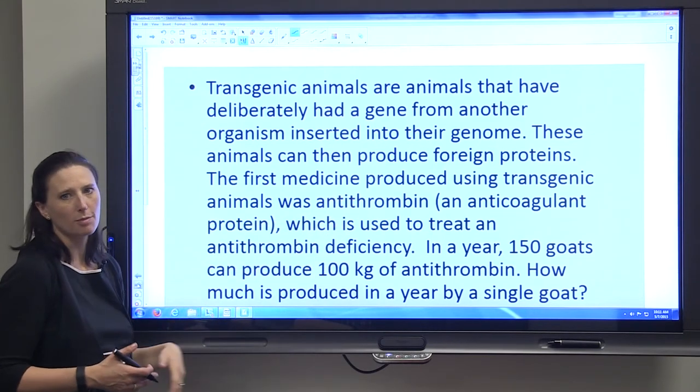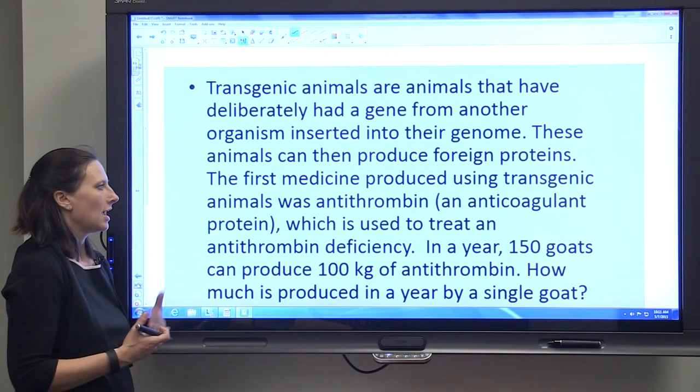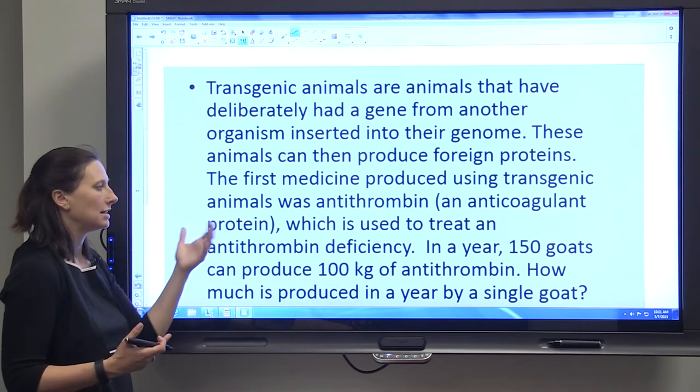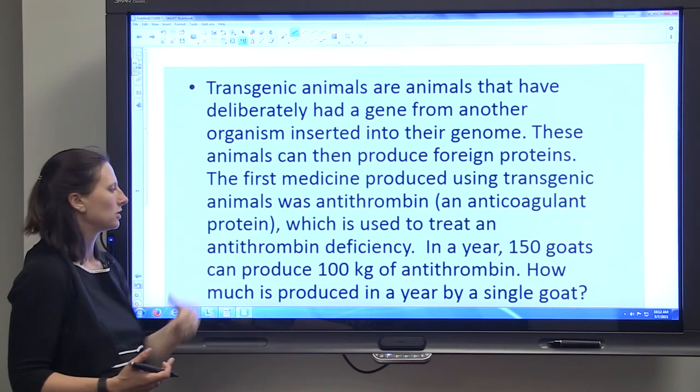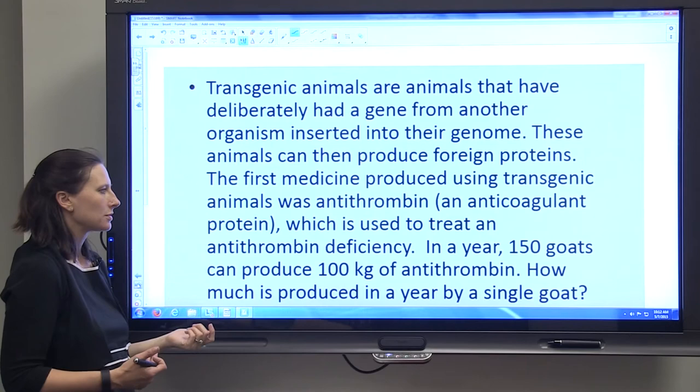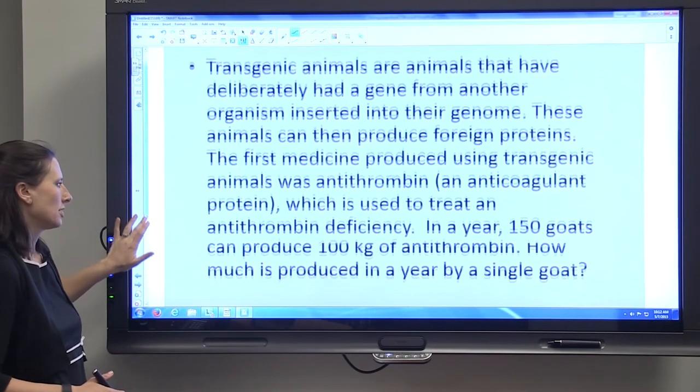If people are born without this anticoagulant protein and they need it, they can take antithrombin the drug, and it's produced by goats in their milk. In a year, 150 goats can produce 100 kilograms of antithrombin.